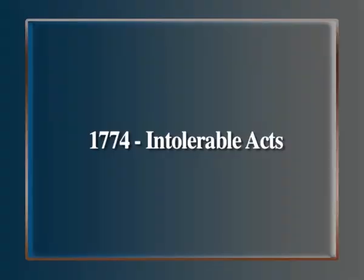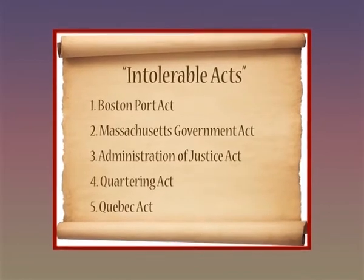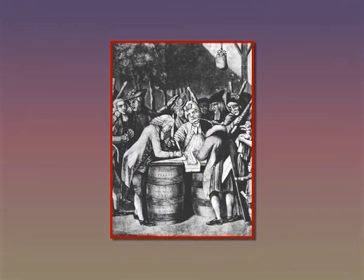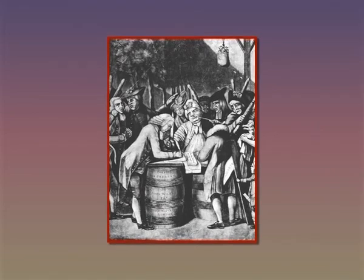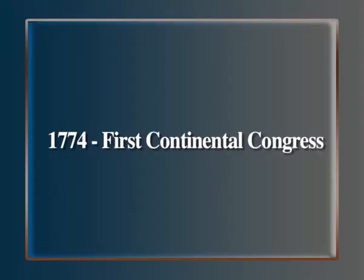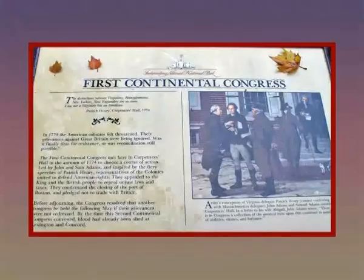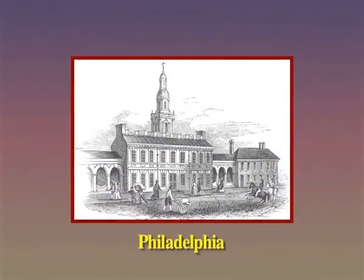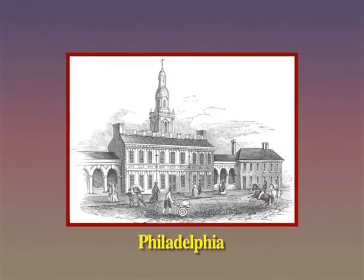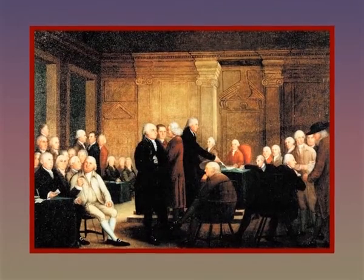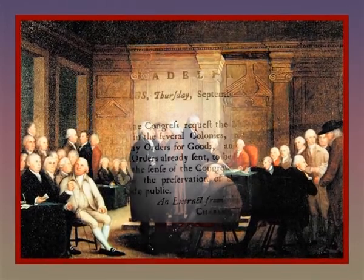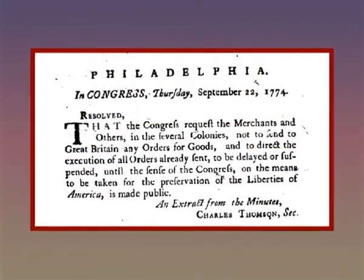1774: Intolerable Acts. These were passed in response to the Boston Tea Party and placed restrictions on the colonists' movements, including outlawing town meetings and the closing of the Boston Harbour. 1774: First Continental Congress. In response to the Intolerable Acts, 12 of the 13 colonies met in Philadelphia in September and October of 1774. One of the main results of this Congress was the creation of an association calling for a boycott of British manufactured goods.